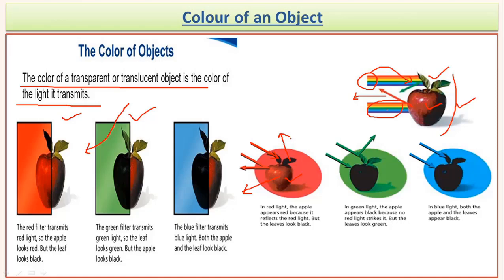If you take the same apple under green light, the apple will appear black in color because it absorbs the green color. On the other hand, the leaves will appear green because the green color is reflected back from their surface. But if you take the same apple under blue light, the whole apple as well as the leaves will appear dark in color, because both the leaf and the apple absorb all the blue light.